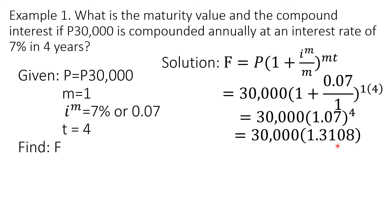By using your calculator, when you raise 1.07 to the 4th power, you'll get 1.3108, rounded to the nearest 4 decimal places. When I multiply this by 30,000, you will get 39,323.88. That is already rounded to the nearest hundredths or 2 decimal places. So that's the maturity value.